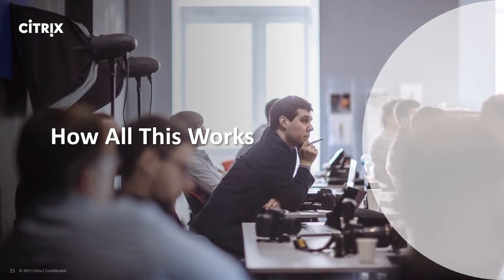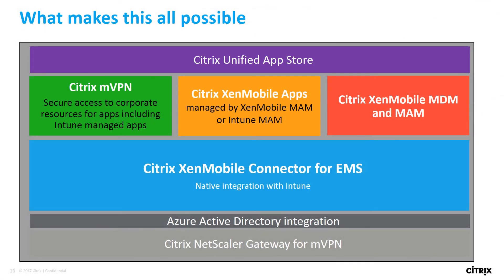Now let's see how all this works. There are a number of rich capabilities offered through the ZenMobile and EMS solution, which we've mentioned earlier. These capabilities include Citrix Unified App Store, ZenMobile MicroVPN for EMS-enabled apps to access on-prem resources, ZenMobile apps such as Secure Mail that can be managed by Intune, ZenMobile MDM and MAM services for high-security use cases, Azure Active Directory integration, Citrix Netscaler Gateway for the microVPN, and ZenMobile Connector, which is a cornerstone of the integration between EMS Intune and ZenMobile.